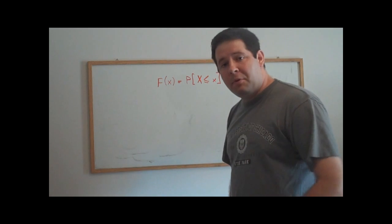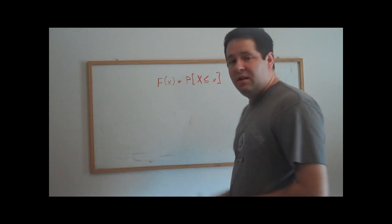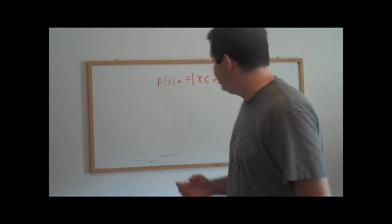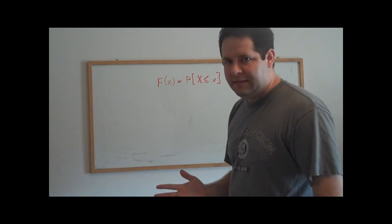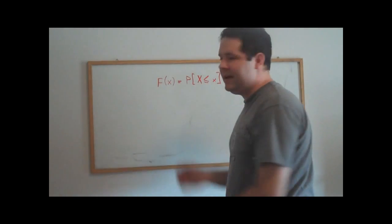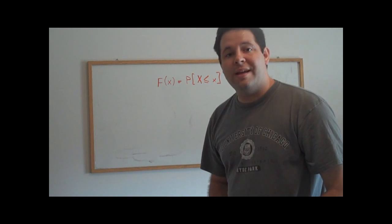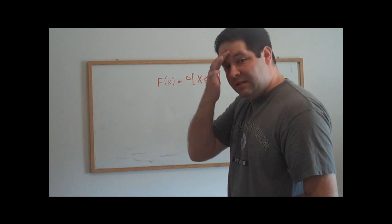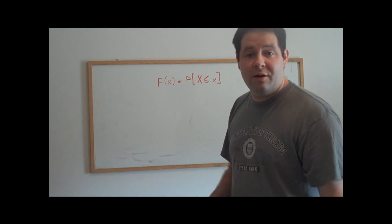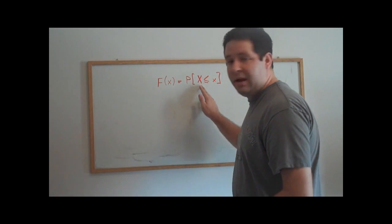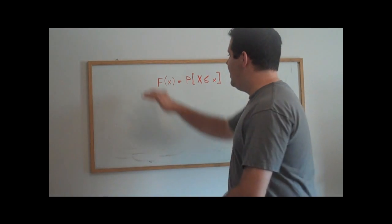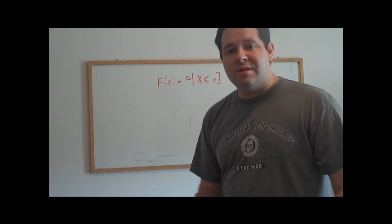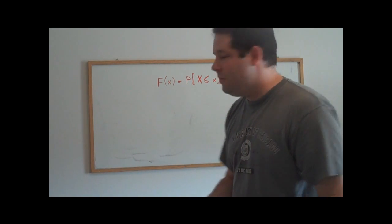And because, remember, a random variable is a function into the real numbers, this equality here makes sense. And so we can think of this as our definition for a distribution function. This has got to be defined for the entire real line because this random variable, we don't really know what it is before we start describing it. This distribution function allows us to describe the random variable.